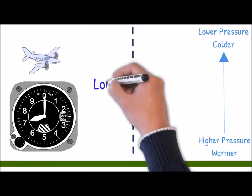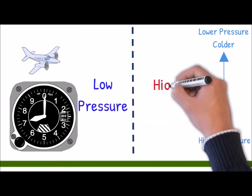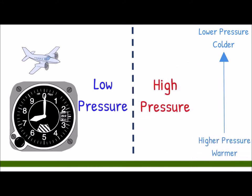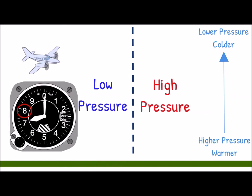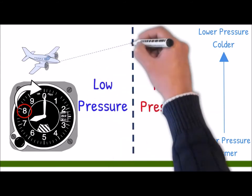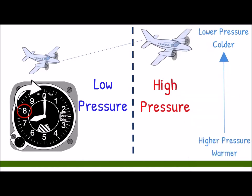Now imagine the aircraft is flying from low pressure to higher pressure. Without adjusting the altimeter setting, the altimeter thinks it is descending. And if the pilot did nothing, the altimeter would display a lower altitude — say 6,800 feet. Slowly the pilot will climb to maintain the same indicated altitude of 7,000 feet. Without changing the altimeter setting, the pilot would gradually climb, meaning the pilot is now flying 200 feet higher than desired. The aircraft's true altitude will be higher than indicated.